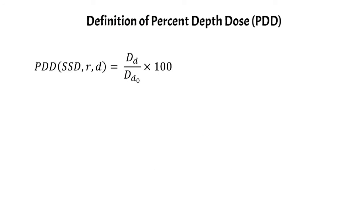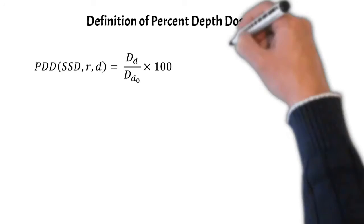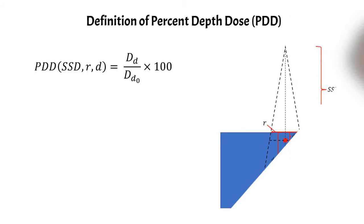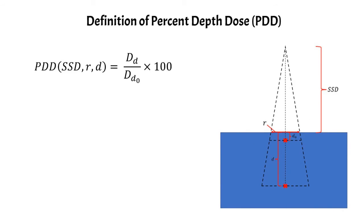In essence, the PDD is just a ratio of doses. One is taken at depth d and one is taken at depth d naught, and you can see on the right here the geometry that we're dealing with.